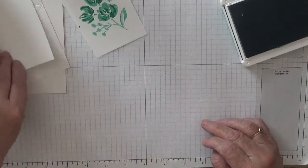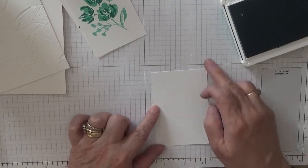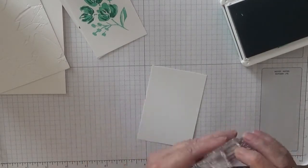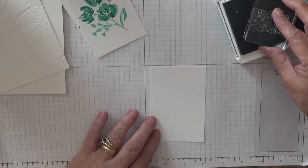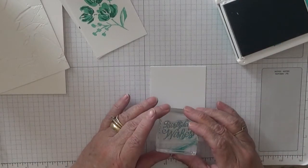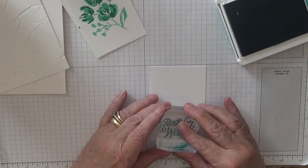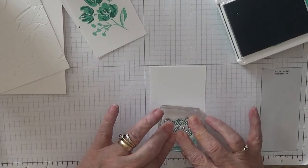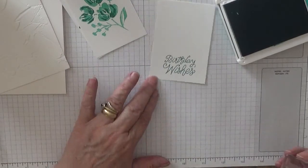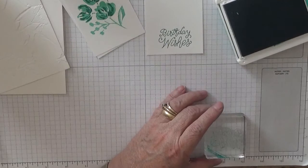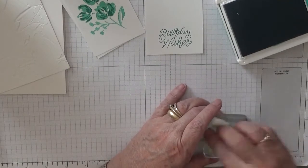Right, and then with the piece, the two and three quarters by four inch, and with Bermuda bay, we're going to stamp our birthday wishes right at the bottom. Like that. That looks actually quite nice.